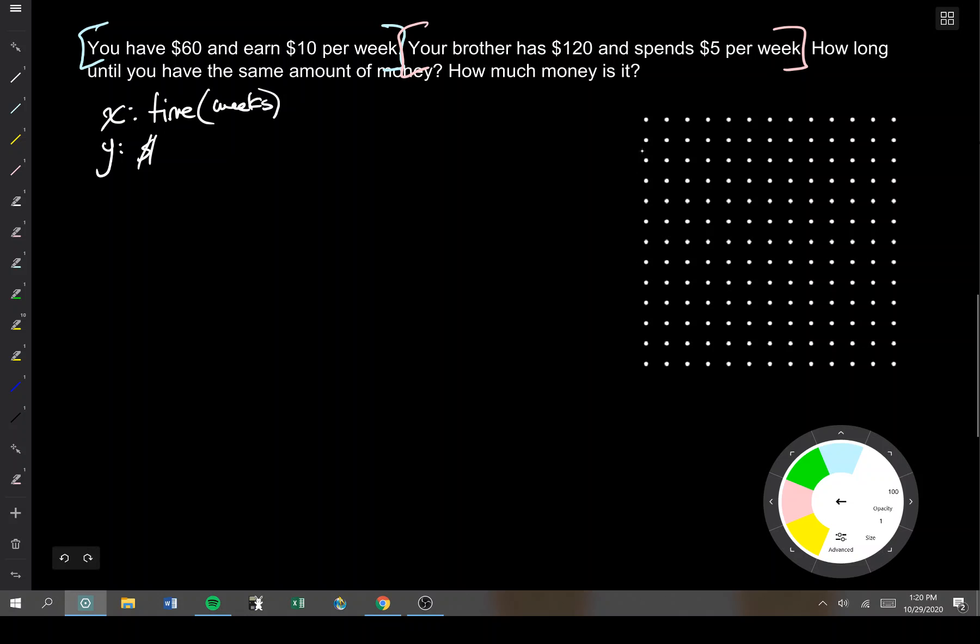I need an equation for each person. There's the equation for you and me, and there's going to be the equation for our brother. For you and me, our money, Y, is equal to $10 we get per week times the number of weeks, plus our initial starting amount of $60. This is our starting spot. This is our change. The slope is the rate of change. So we're starting at $60, and we're gaining $10. Our brother, his money, he is starting at $120, but he's losing $5, so his is negative. He's losing $5, so he has a negative slope, but he started at $120.